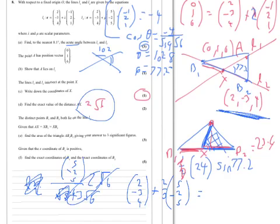2 thirds of 5 is 10 thirds plus 6 thirds is 16 thirds. So 16 thirds.